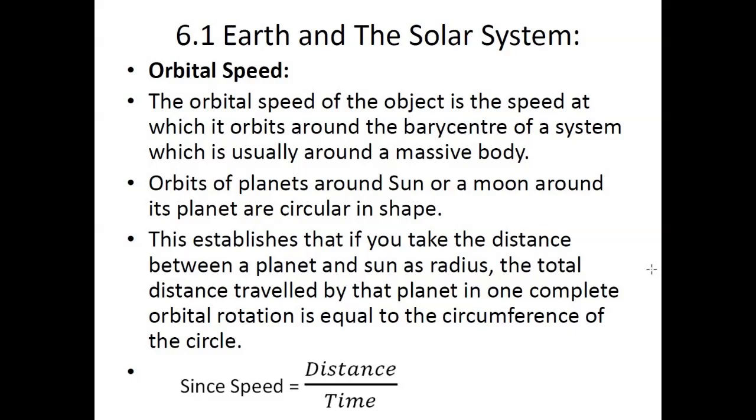Orbital speed: The orbital speed of an object is the speed at which it orbits around a star or the barycenter of a system. Orbits of planets around the sun or moons around their planet are usually circular in shape. If you take the distance between a planet and the sun as the radius, the total distance traveled in one complete rotation would equal the circumference of that circle.